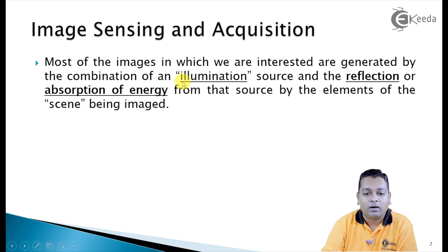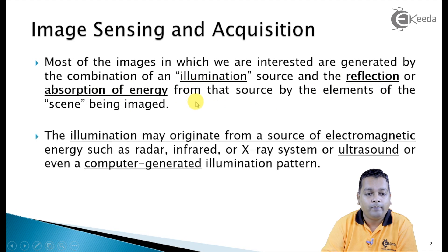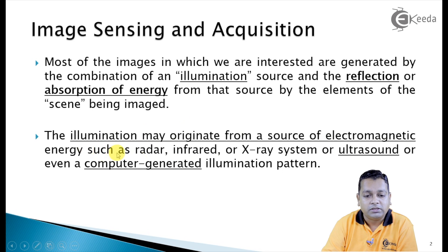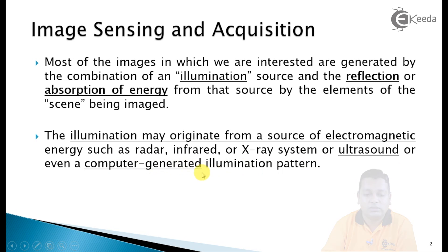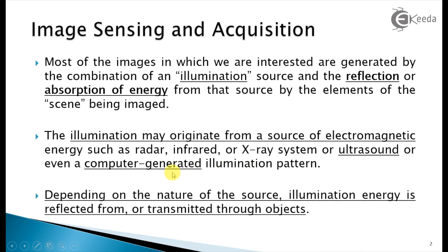The illumination may originate from a source of electromagnetic energy — examples include radar, infrared, or X-ray systems — or from ultrasound or even computer-generated illumination patterns, which we termed synthetic images in the earlier chapter. Depending on the nature of the source, illumination energy is reflected from or transmitted through objects in the scenario.